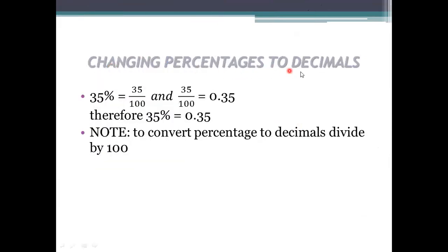Next is changing percentages to decimals. We have seen fractions to percentages and percentages to fractions. Now, how do you change a percentage to a decimal? For example, 35 percent — first write it as a fraction: 35 by 100. Dividing gives 0.35, so 35 percent equals 0.35.